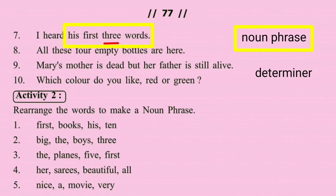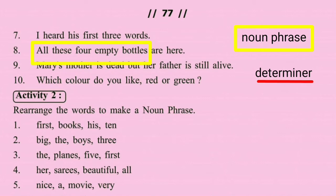In 'all these four empty bottles', the noun phrase has head noun 'bottles' and 'empty' as adjective. 'All' is a pre-determiner, 'these' is a demonstrative determiner, and 'four' is a cardinal determiner. All these are pre-modifiers used before the head noun.